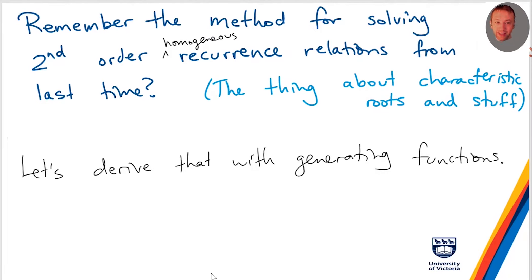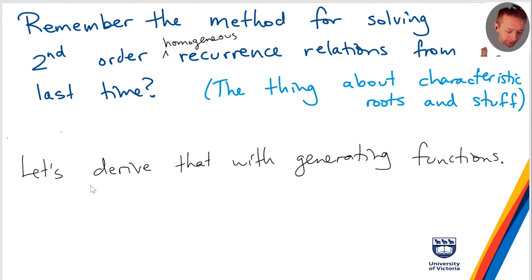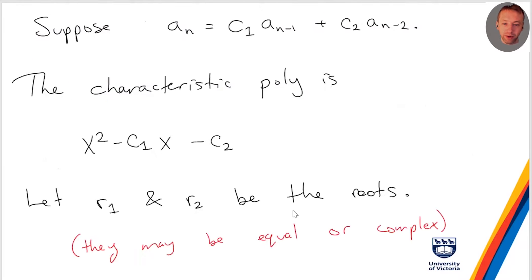Remember last time we were solving these second-order homogeneous recurrence relations? I told you there's a quick way to get the answer where you just take the characteristic equation, find the roots, and write down the general solution. If you want a specific solution, you can get it. So let's derive that using generating functions, using the ideas we've presented for the non-homogeneous case. I'll show why the solution to the homogeneous case is what it is — why it all boils down to characteristic equations.